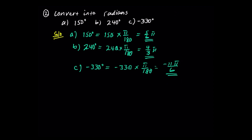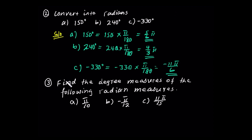So that's it. Find the degree measures of the following radian measures: pi over 10, negative pi over 12, and 11 pi over 15. These are given in radian measure, so convert to degree measures. The formula converts directly.